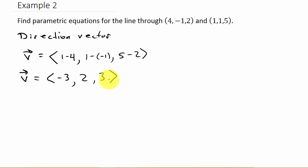All right, so here we have it. We'll use the point (4, -1, 2). That's our x₀, y₀, z₀, and then here's our a, b, c.